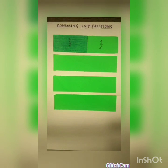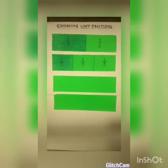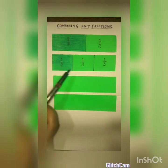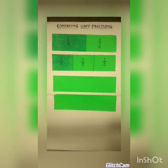I will take the second strip and will divide it into three equal parts — like this. And I have colored one part out of three parts.